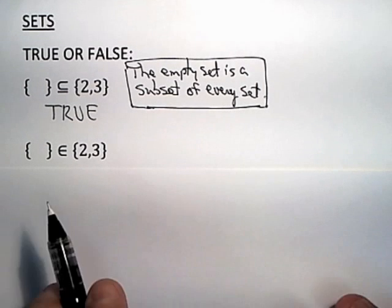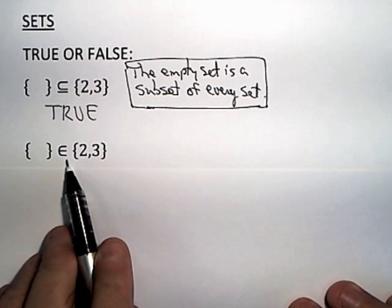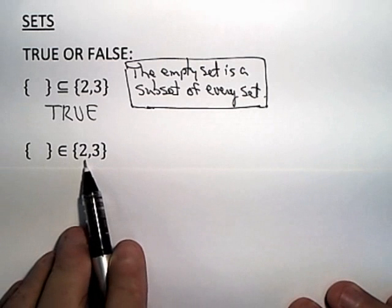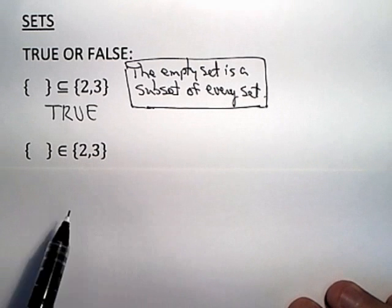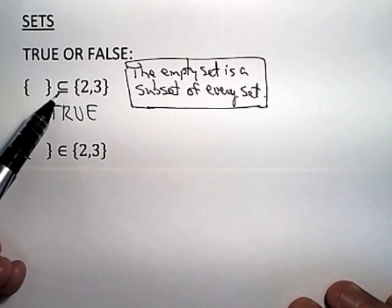Second, the empty set is an element of the set containing the elements 2 and 3. Now, be careful. This is the reason I'm posing this.